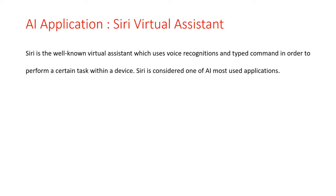Siri continuously searches whether the name XYZ is present in the contact list or not, then tries to relate the contact name XYZ. Siri continuously checks if the XYZ person is present in the contact list and performs the task — which means calling this person XYZ. So here Siri is performing the function of calling, and the final output of this action will be calling XYZ, considering all possible situations. This is the simple working of Siri as a virtual assistant.